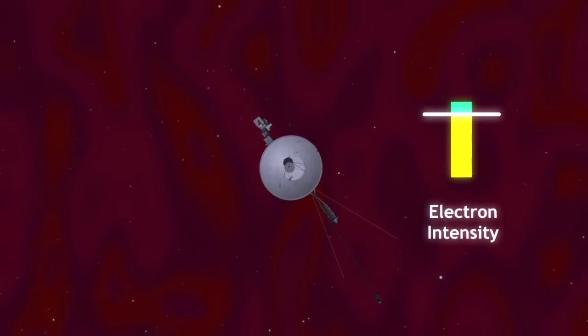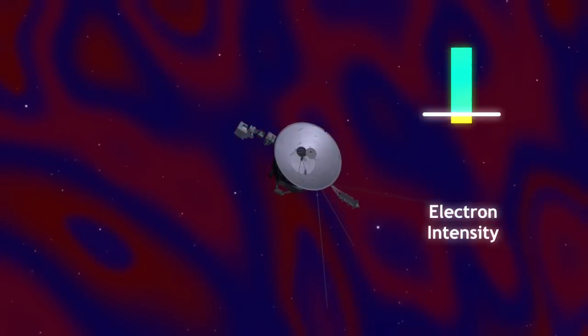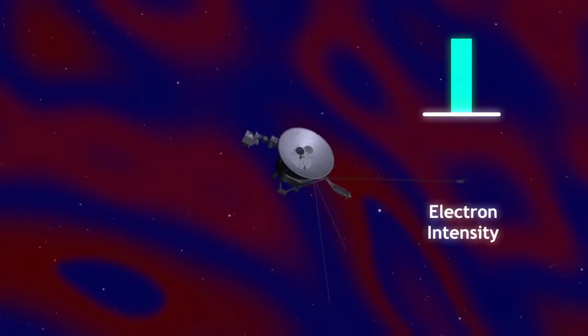When it is in the region, Voyager 2 sees many trapped cosmic rays and electrons. When it is out of the region, the spacecraft sees fewer.